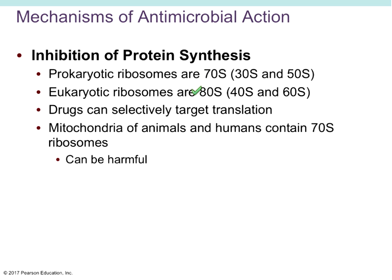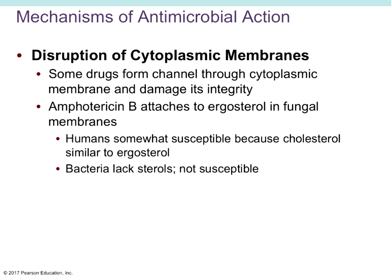We have to be careful with drugs targeting the 70S ribosome because the mitochondria in eukaryotic cells also have 70S ribosomes. If we administer a drug that affects only 70S ribosomes, we're also going to affect the mitochondria of our patient's cells, reducing their energy levels. So drugs that inhibit protein synthesis by targeting the 70S ribosome can be harmful to our patients.